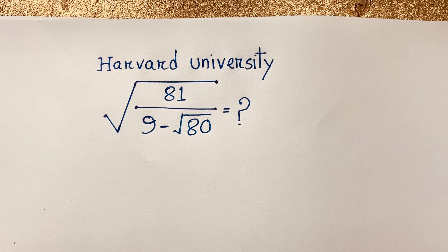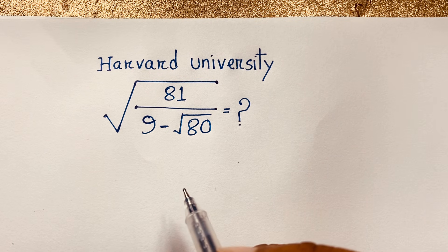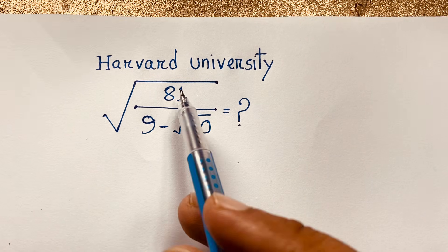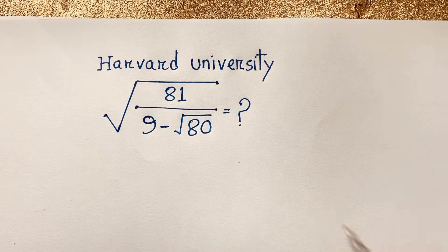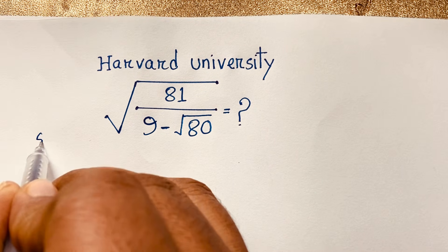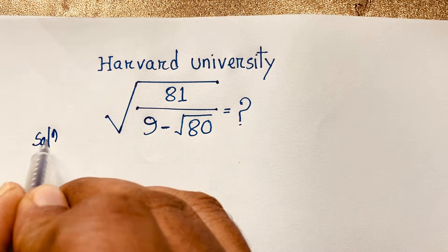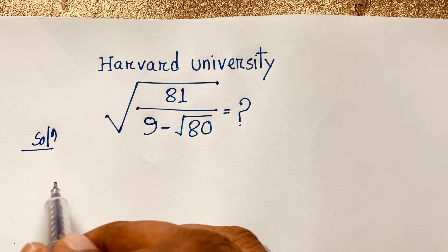Hello everyone, welcome to Rasha's classroom. Today we are solving an interesting radical math problem. We are going to simplify square root of 81 over 9 minus square root of 80, and find out what it equals.